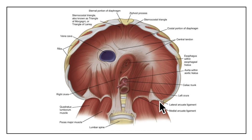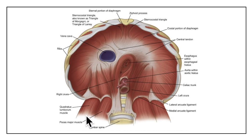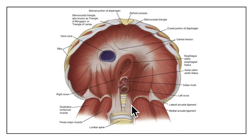The lateral lumbocostal arch, or lateral arcuate ligament, is a tendinous arch in the fascia covering the upper part of the quadratus lumborum muscle. It is attached medially to the front of the transverse process of the L1 vertebra and laterally to the lower border of the 12th rib.